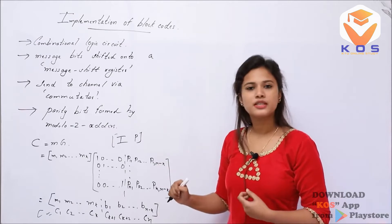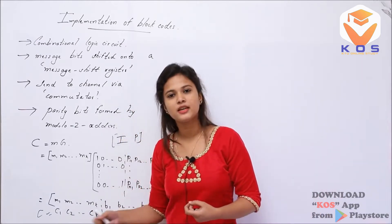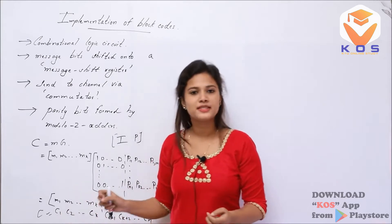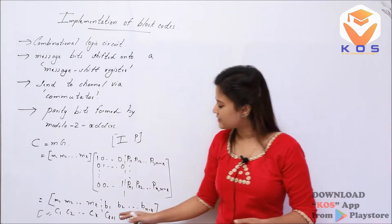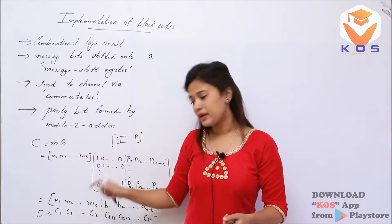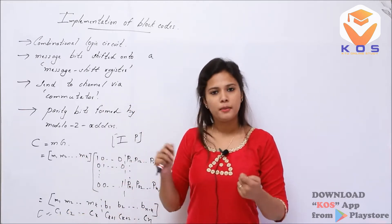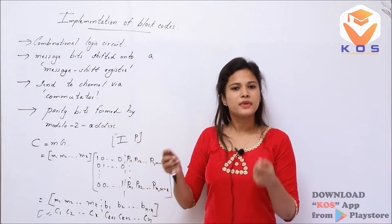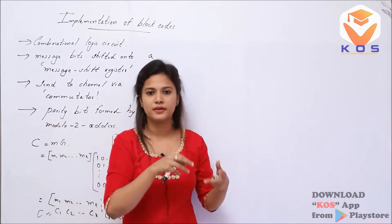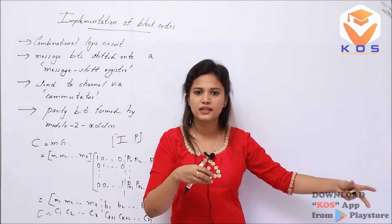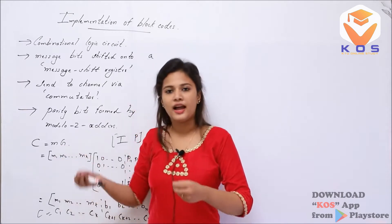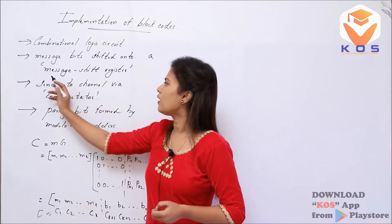When we use C1, C2, etc., we can use the message bits. The message bits are the same as the input bits, and the code bits are the output. So C equals MG. We need to store the input bits M1, M2, etc. somewhere, and we will use a message shift register.